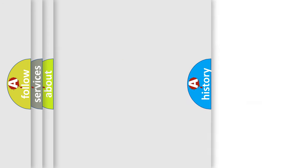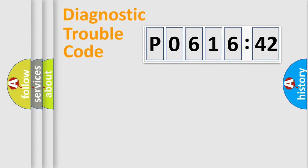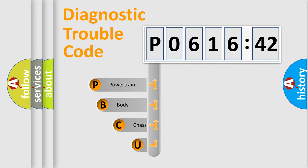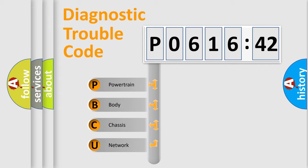We divide the electric system of automobile into the four basic units: Powertrain, Body, Chassis, and Network. This distribution is defined in the first character code.